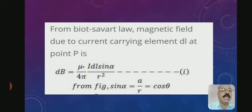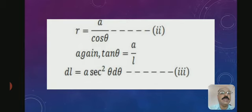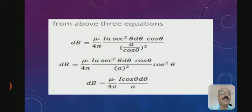Applying Biot-Savart law, the magnetic field due to the current-carrying element DL at point P is: dB = (μ₀ / 4π) · I·dL·sin(α) / R², called equation (1). From the figure, sin(α) = A/R = cos(θ), so R = A / cos(θ), which is equation (2). Also, tan(θ) = A/L, therefore dL = A·sec²(θ)·dθ, which is equation (3).